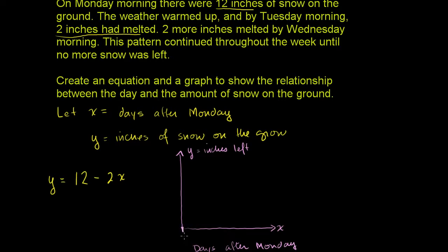And so we have 0 days after Monday, 1, 2, 3, 4, 5, and 6. And then on Monday, which is exactly 0 days after Monday, we have 12 inches on the ground right there. And actually, I could do a table. Let me draw this.